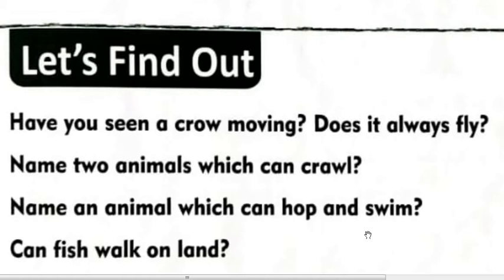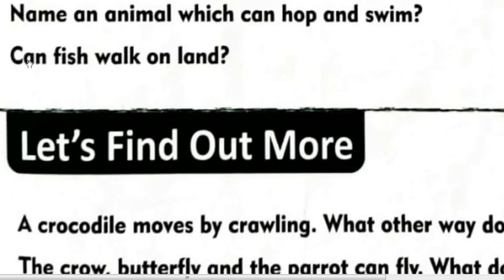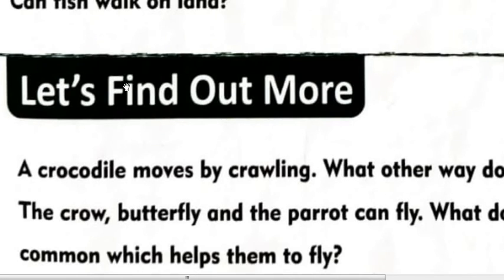Name an animal which can hop and swim. ऐसे animal का नाम बताएं जो hop करता है और swim भी करता है — वो frog है. Next: can fish walk on the land? क्या मछली ज़मीन पर चल सकती है? No, fish never walk on the land. मछली को जब भी पानी से बाहर निकालेंगे तो वो मर जाती है, तो वो ज़मीन पर चल नहीं सकती.